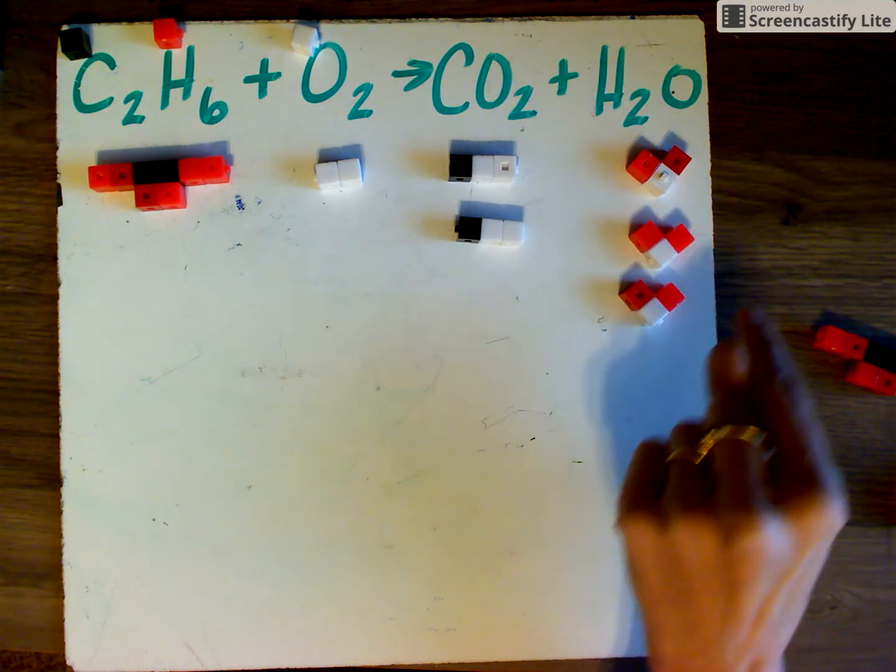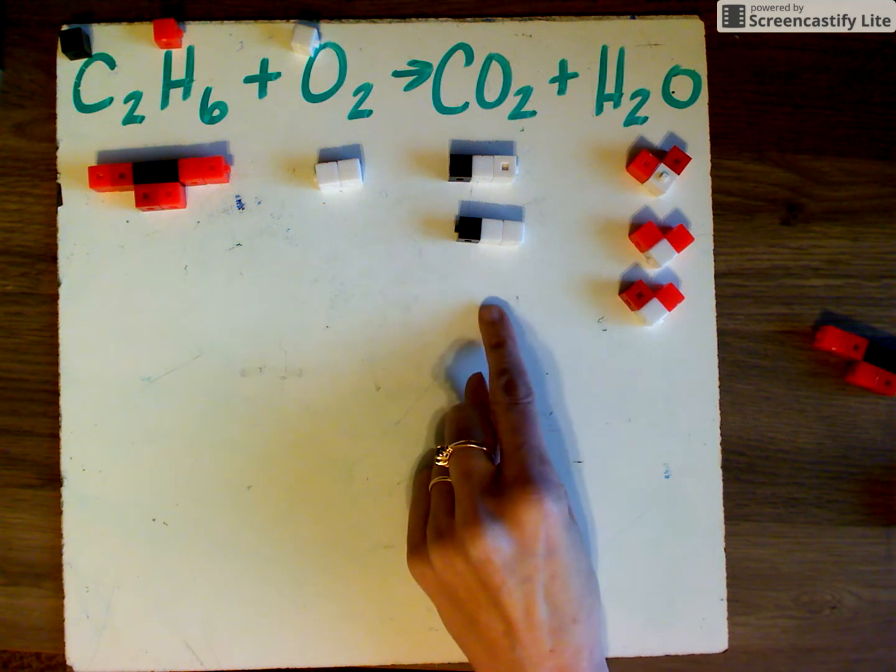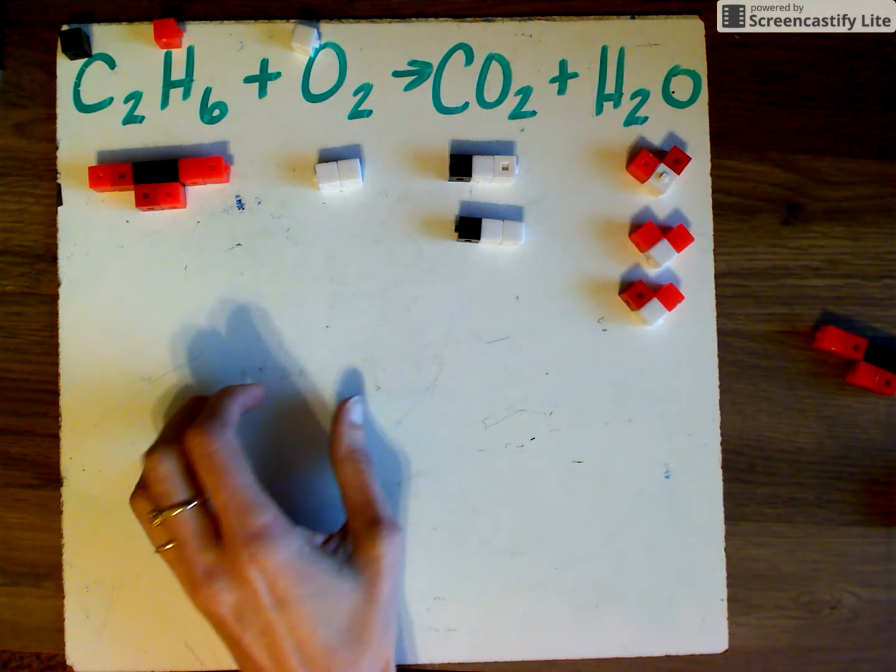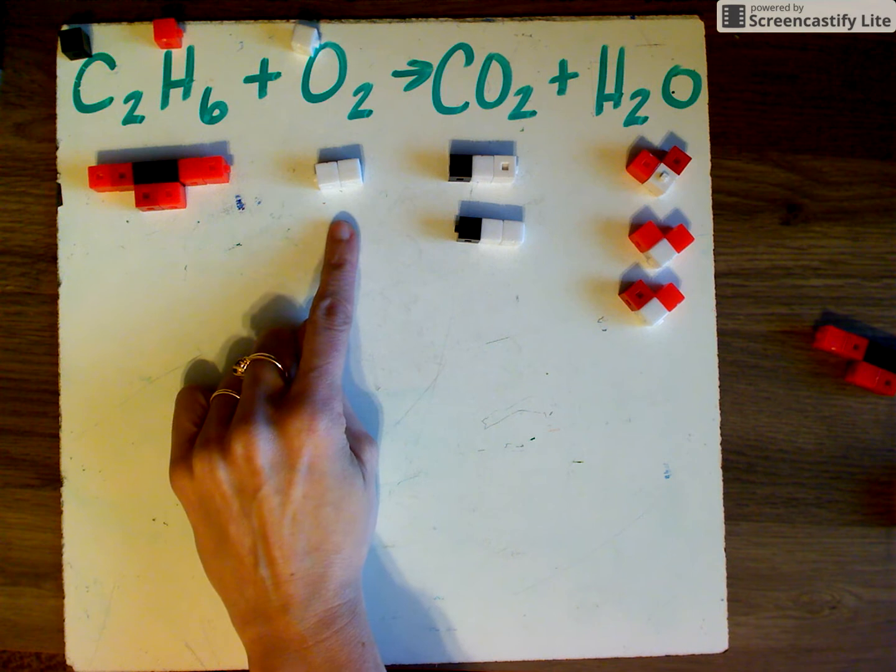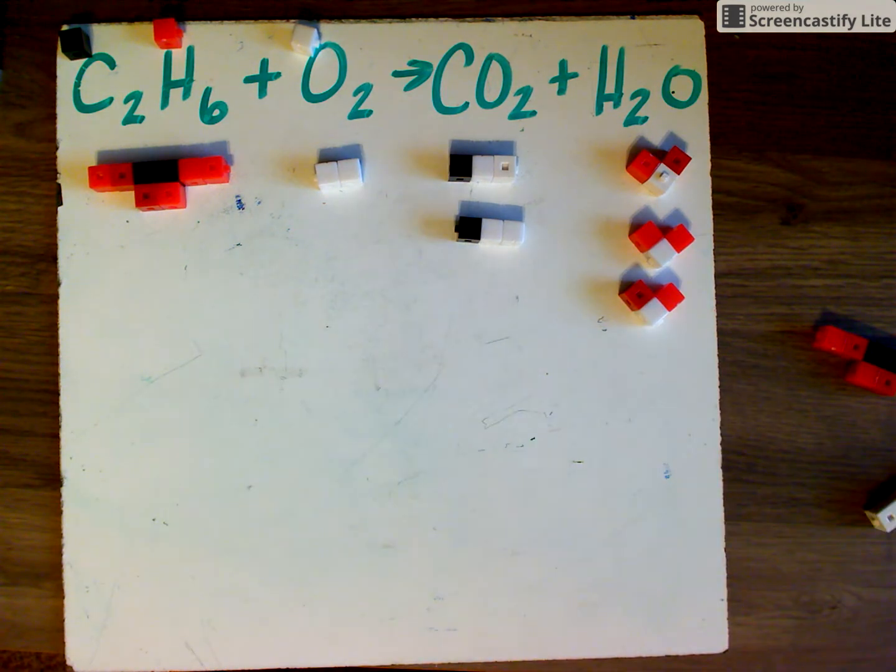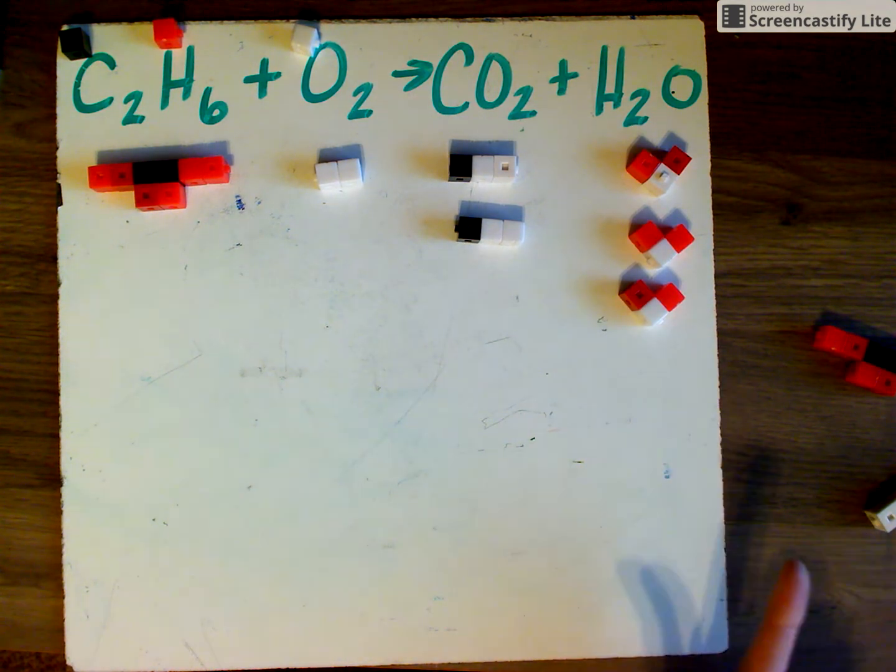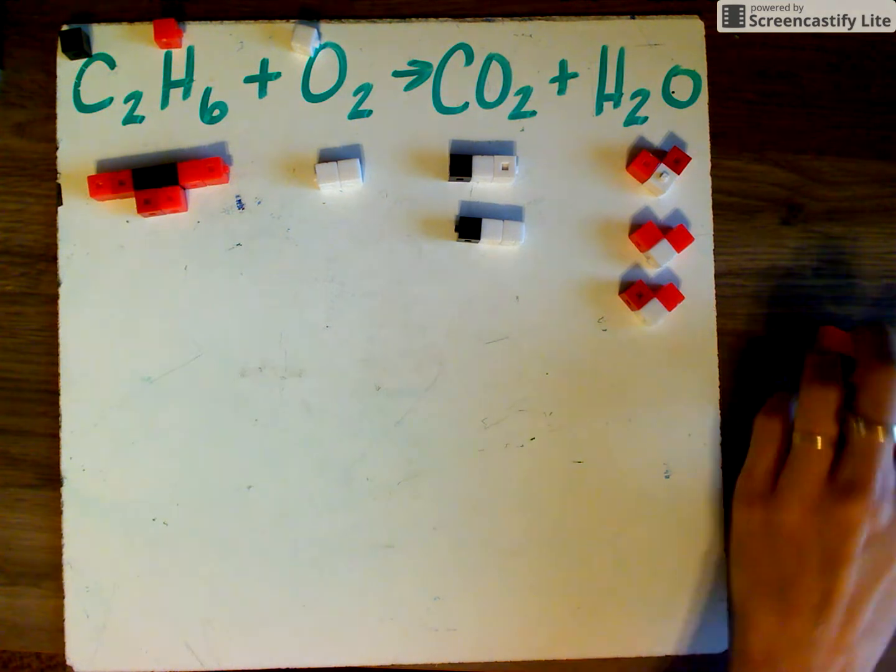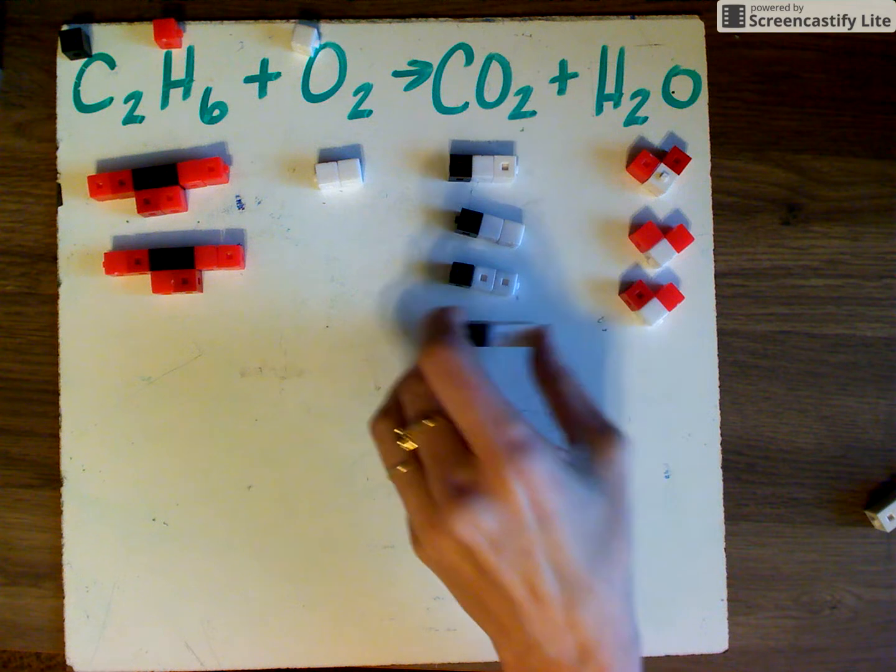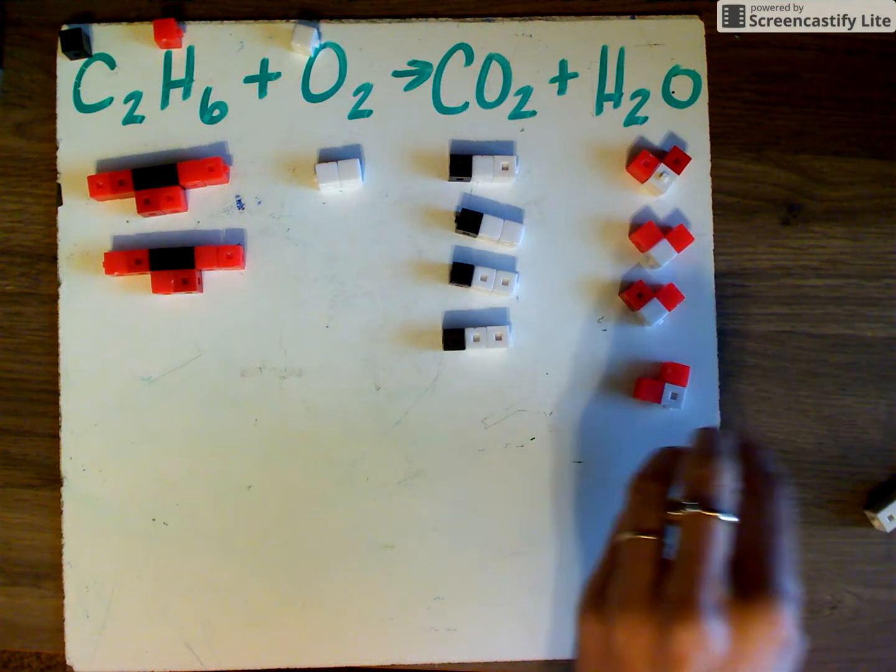Now we have C2H6 and O2 to make two CO2 and three H2O. On this side, we have seven oxygen atoms. Four from CO2 and three from H2O. That means we need seven oxygen atoms in the reactants, but we can't do that because they always come in pairs. To fix that, if we multiply everything by two, then we'll be able to get an even number. So one times two is two. Two times two is four. Three times two is six.